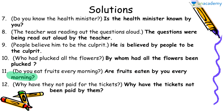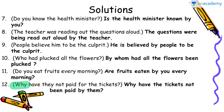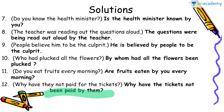The last sentence: Why have they not paid for the tickets? It starts with 'why,' making it an interrogative sentence. 'Have' is followed by 'paid,' which is the third form of 'pay,' indicating this sentence is in present perfect tense. It will become: Why have the tickets not been paid for by them?